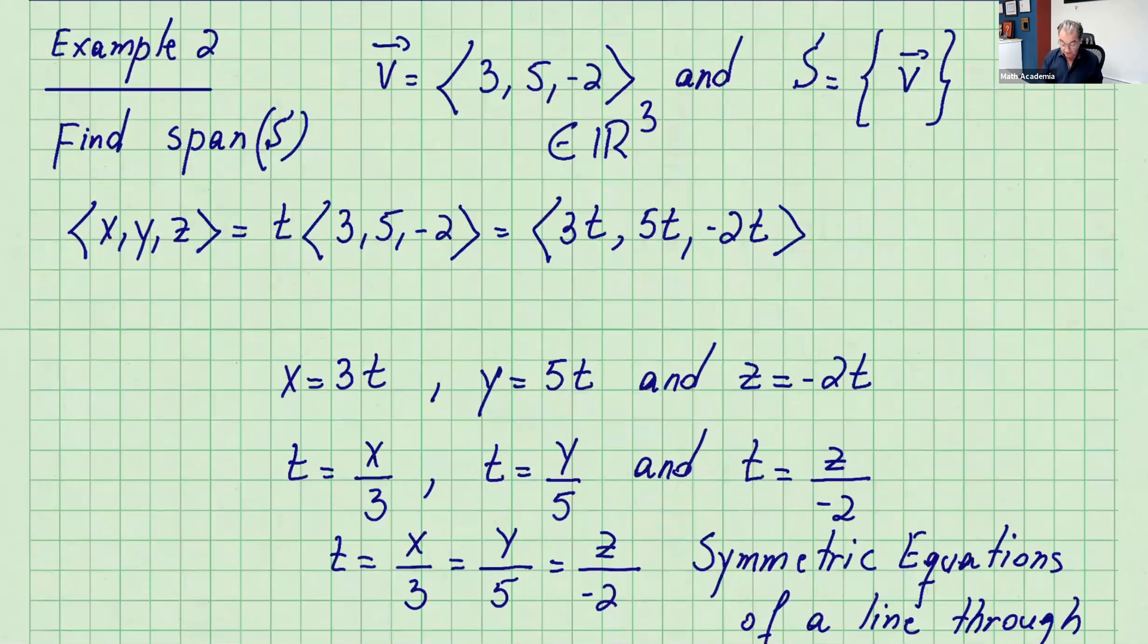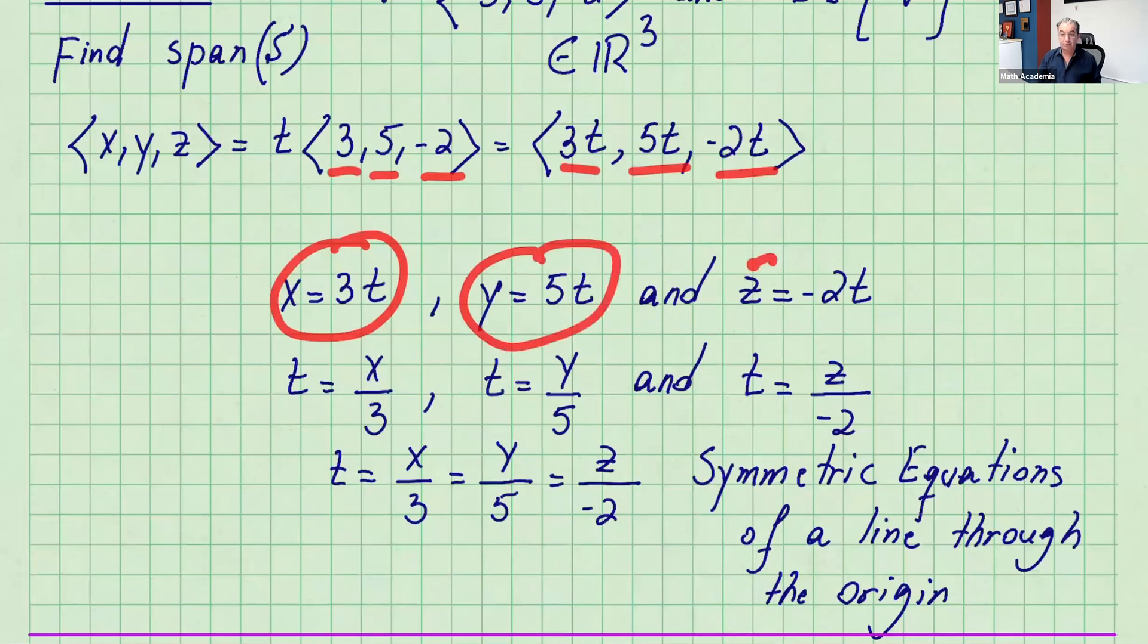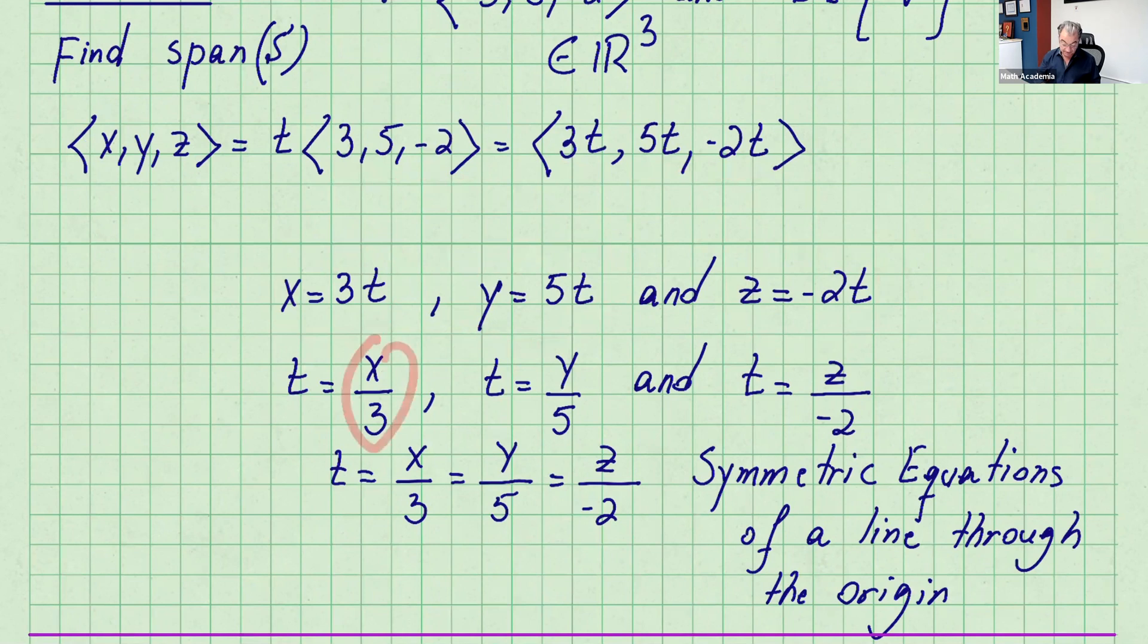Let's look at example number 2. Here we are in R3 with one vector. So we want the span of v. You can do the same thing: x, y, z equals t times (3, 5, -2). So you get 3t, 5t, and -2t. Therefore x equals 3t, y equals 5t, and z equals -2t. Isolate t in each case. These are parametric equations of a line through the origin. If you isolate t and put them equal to each other, you get the symmetric equations of the line through the origin.